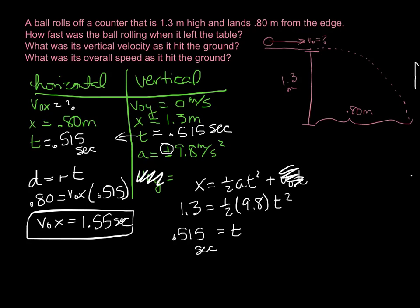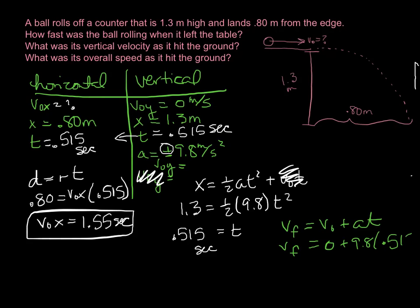That answers the first part — the initial x-velocity is 1.55 meters per second. But what was the vertical velocity as it hit the ground? Now that we know the time, we use v_final = v_initial + at: v_final = 0 + 9.8 × 0.515, so the final y-velocity equals 5.05 meters per second downward.